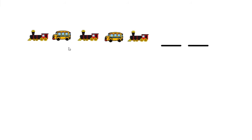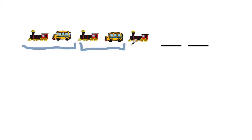Train, bus, train, bus, train — do you notice anything repeating? We do. We see train and bus, train and bus, train — what would come next in our pattern? A bus. Very good. So you have train, bus, train, bus, and then train, bus again.